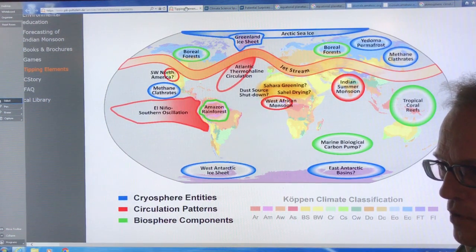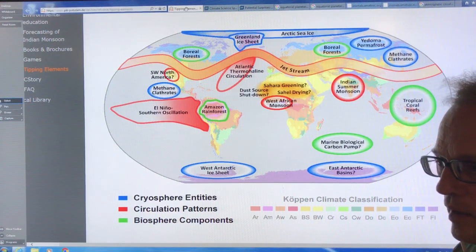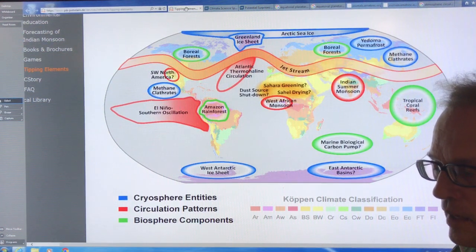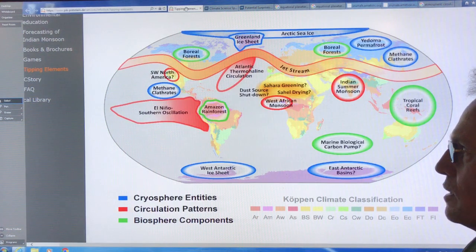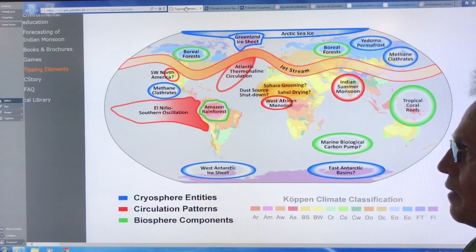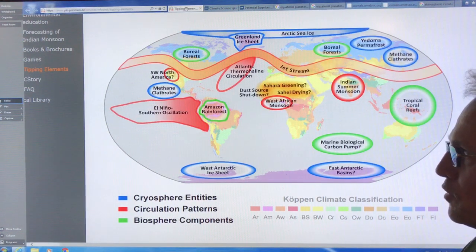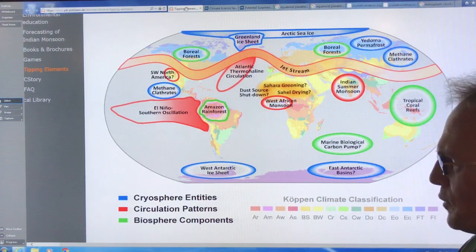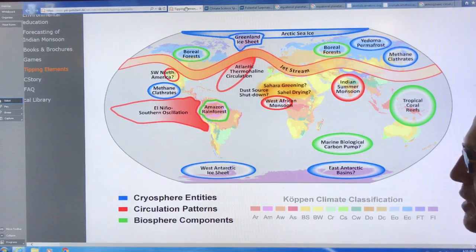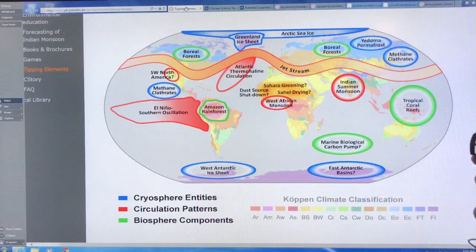And methane has a very large global warming potential. It's 34 over 100 year timescale, but it's 86 on a 20 year timescale. Although recent data from this year, a paper came out and it's showing that the methane global warming potential is more like 96 over 20 year timescale. I'll do a separate video on that.